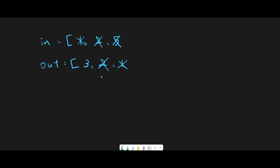There's one important point: if we want to move all numbers into output, there is a condition — we only do it if output is empty. Let me explain why. Say output has three, and then input gets four and five pushed. The next number we should peek or pop is three. What if we don't have the empty check?